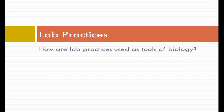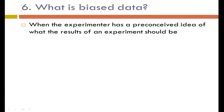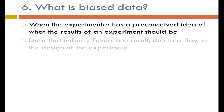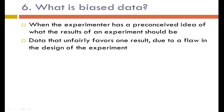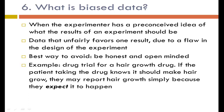The next questions are about lab practices. Biased data happens when the experimenter has a preconceived idea of what the results should be, or when data unfairly favors one result due to a flaw in experimental design. The best way to avoid this is to be honest and open-minded. For example, in a drug trial for a hair growth drug, if the patient knows the drug is supposed to make hair grow, they might report growth simply because they expect it — this is the placebo effect.